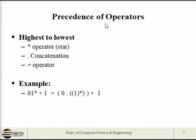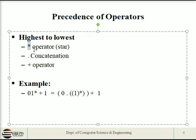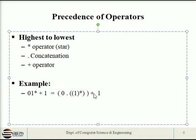Regarding operator precedence: the highest priority operator is the asterisk (Kleene star, the loop). Next is concatenation, such as 1 dot 0 or 0 dot 0. The lowest priority operator is plus, which means either one expression or another is processed. For example, 1-star has highest priority, so we take 1 within brackets with a star, concatenate with 00, and then 0 plus 1-star is given with plus — the lowest priority operator.